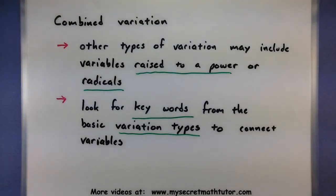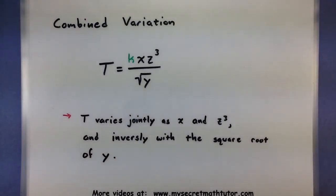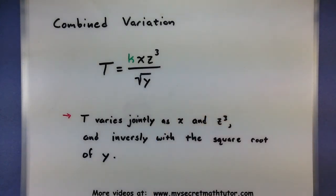Let me give you one example of a combined variation to see how that might work. Here's a combined variation problem, and you can see that the formula doesn't look anything like those basic types. But if we pick it apart, you can see those basic types are actually hidden in there.